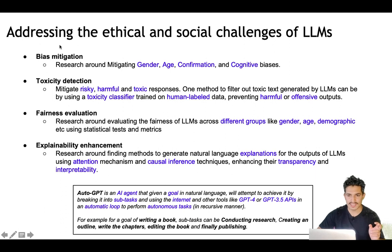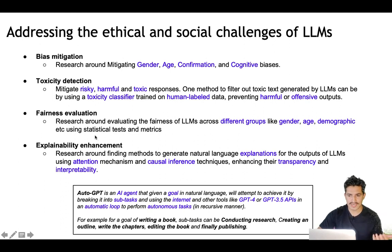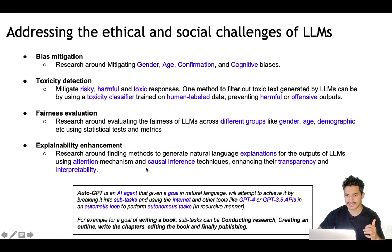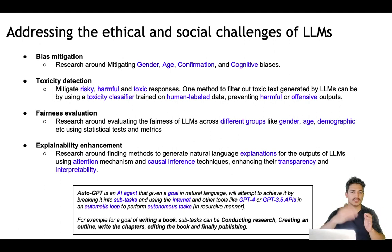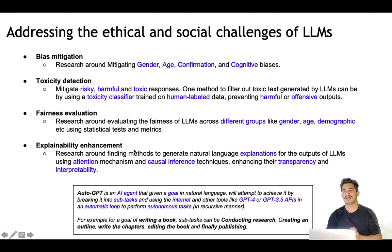Similarly, bias mitigation can use a classifier trained on human-labeled data to detect and flag biases. There is also fairness evaluation — making sure the output of LLMs is fair across different groups like gender, age, and demographic — using statistical metrics to assess fairness. Finally, explainability enhancement ensures the output has the right explanations — using attention mechanisms and causal inference techniques to understand why a particular output was produced given an input, which words were given more importance, thus enhancing the transparency and interpretability of LLMs.